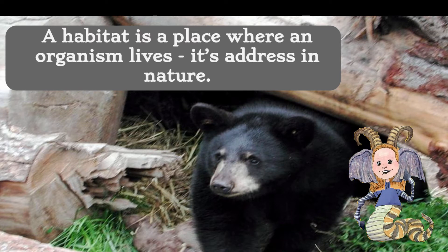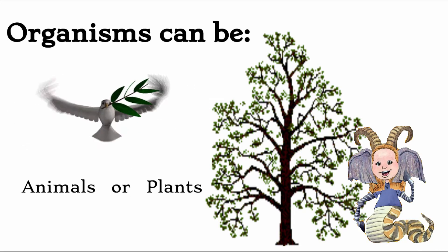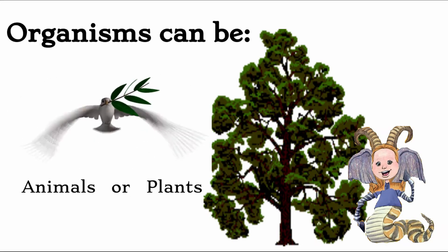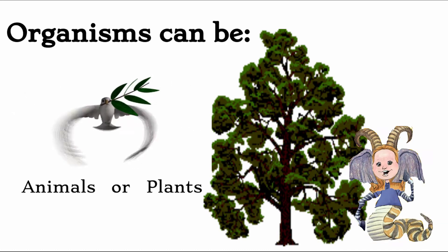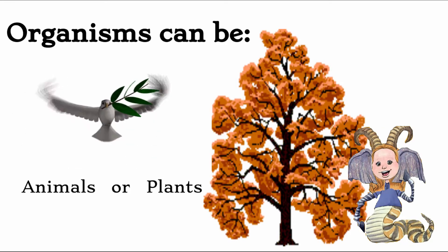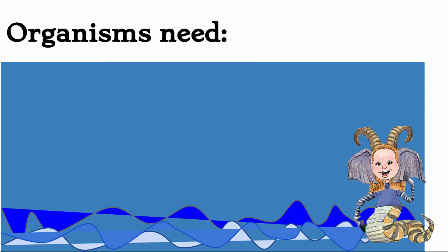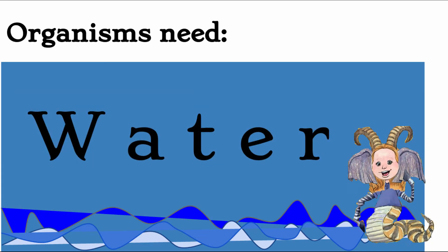Habitat examples could include lakes, streams, forests, or even a drop of water. Organisms can be an animal or a plant — it's a creature. Organisms need water: freshwater, ponds, and streams.